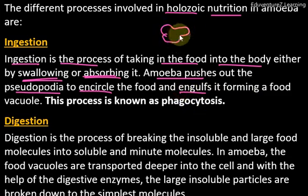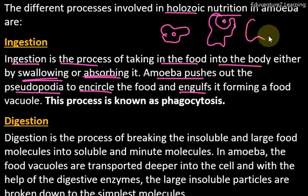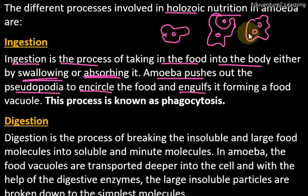Suppose this is our amoeba and there is a food particle nearby. What amoeba does is it creates pseudopodia around the food particle, forming a food vacuole to encircle the food. The food is then brought inside the amoeba and absorbed. This process is known as phagocytosis.